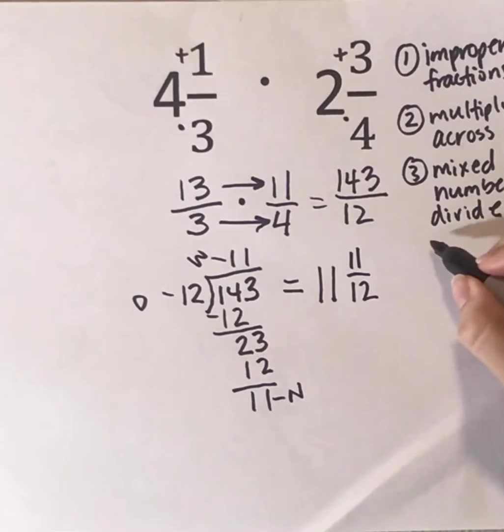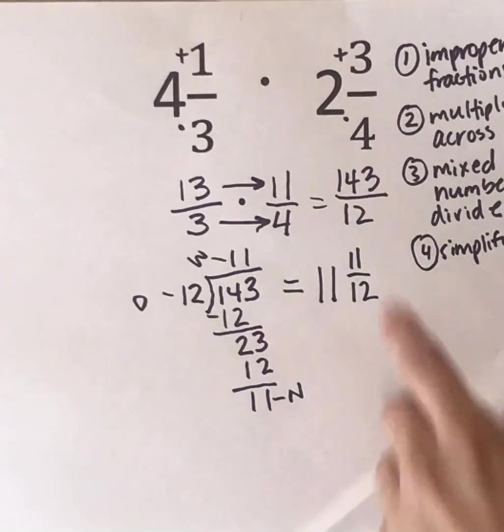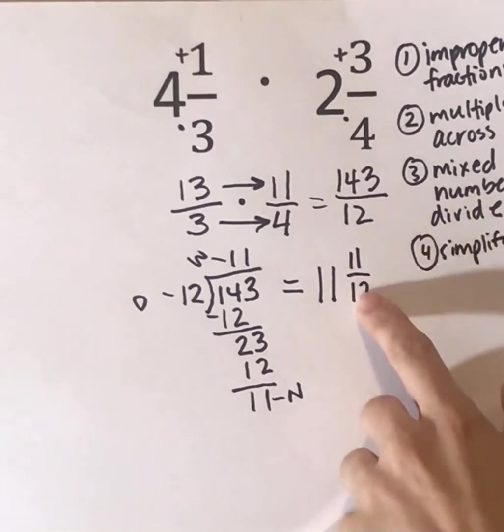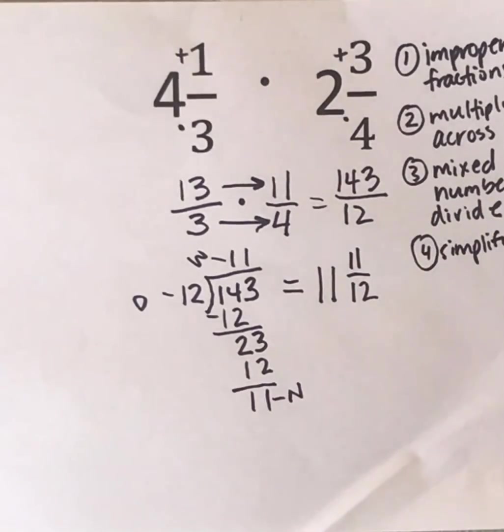Your final step always is to just double check and make sure that my answer is completely simplified. I know it's completely simplified because these two numbers do not have a common factor, which means only one will go into both of those. And 11 is also prime, which means it can't simplify anymore. So this is my final answer, 11 and 11 twelfths.